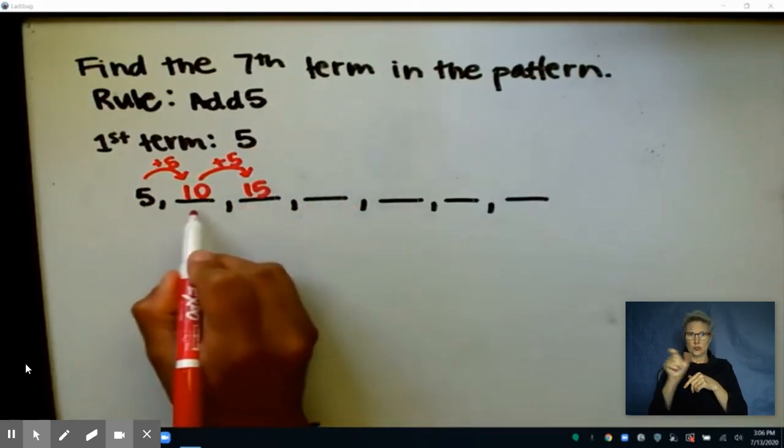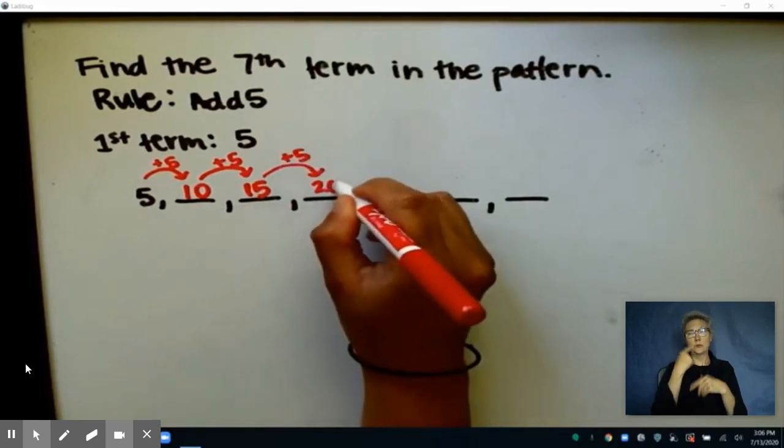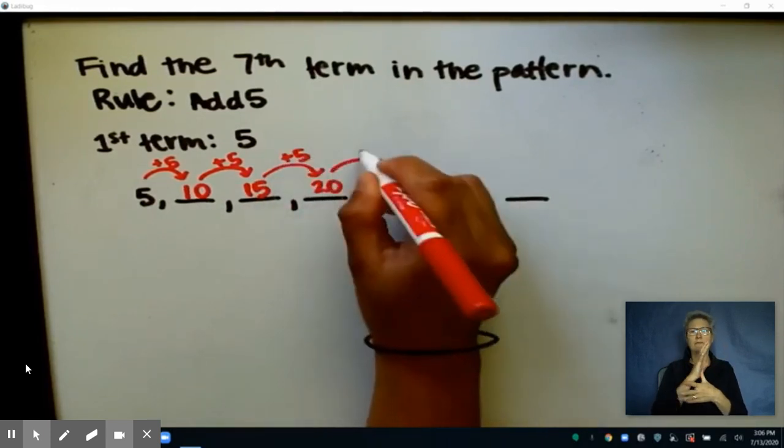So I have 10 plus 5 is 15, and I'll keep going. You're probably starting to realize that you can just be counting by 5s for this pattern.